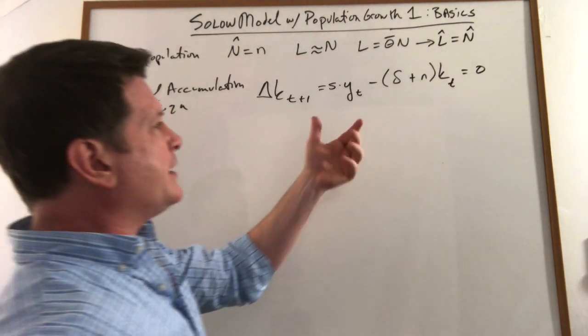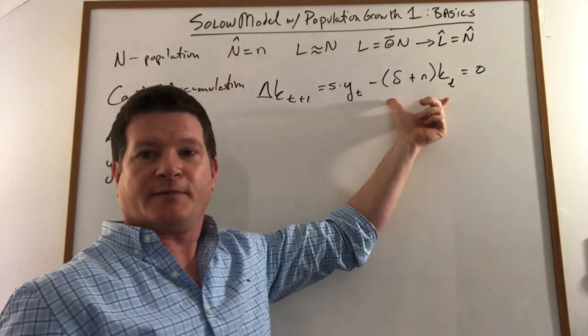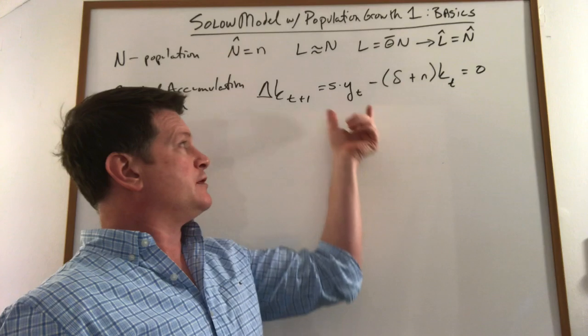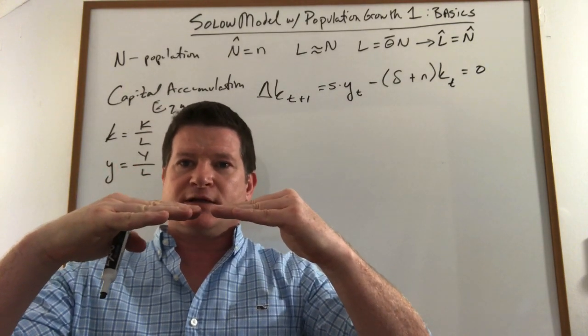So in the old world I would say that your investment rate when it's just equal to the amount your capital is falling apart, that the rate is depreciating, when you're investing just to offset depreciation then your total stock of capital is staying constant.